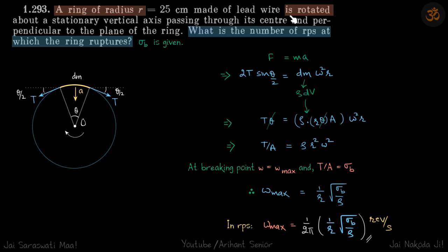We have a ring that is rotated and we need to find the number of revolutions per second at which the ring ruptures. The breaking stress of the ring is given, so this is the ring which is turning.